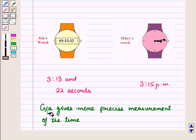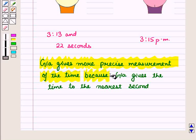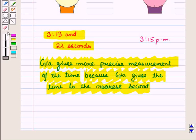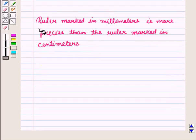Then we say that Gia gives more precise measurement of the time because Gia gives the time to the nearest second. Thus we see that precision is the level of detail that an instrument can measure.